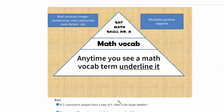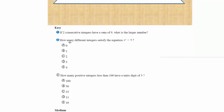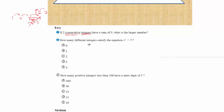The first question: if two consecutive integers have a sum of nine, what is the largest number? First of all, underline it. Consecutive means one after the other — two is after one, three is after two. Integer means no decimals or fractions in between; you jump directly from one whole number to the next.